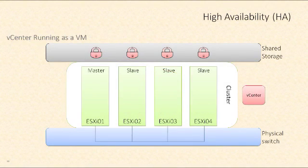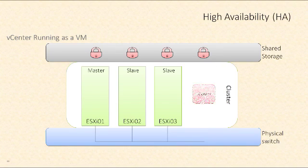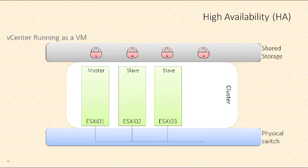You may choose to deploy vCenter as a virtual machine running inside of an HA cluster. So let's say vCenter is running as a virtual machine on ESXi 04. What happens if ESXi 04 fails? vCenter goes down. But HA continues to operate, because we have something running inside our hosts called the Fault Domain Manager, or FDM. The FDM will ensure that the vCenter server gets rebooted on some other ESXi host, and then vCenter will begin to function again.